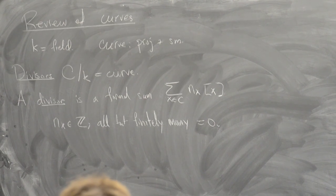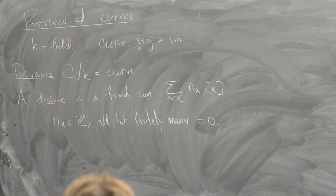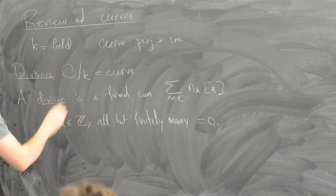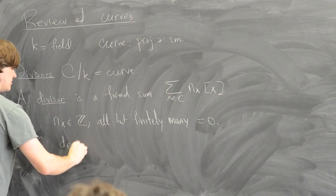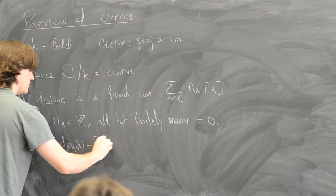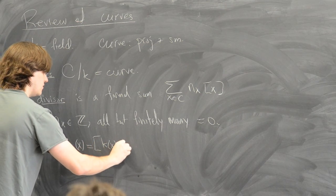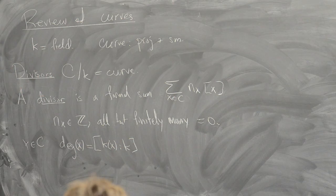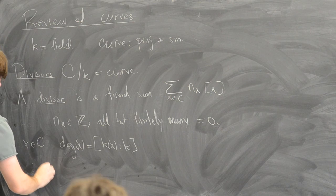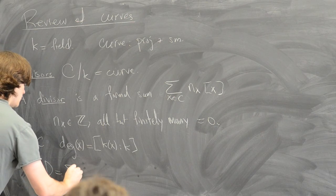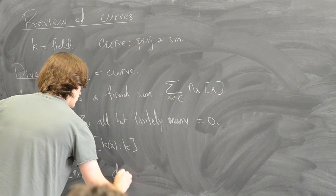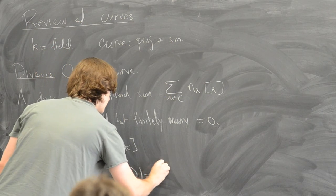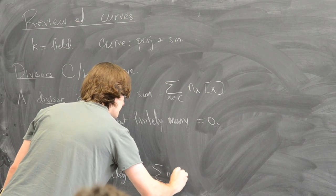There's a notion of the degree of a divisor. We start by defining the degree of a point: for a point in C, its degree is defined to be the degree of the extension of its residue field over the base field. If we have a divisor D, we define its degree by extending linearly: the degree of D is the sum of n_x times the degree of x.